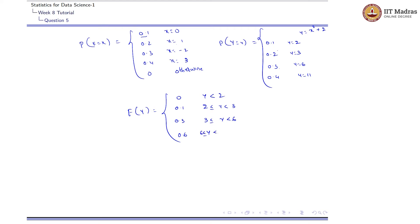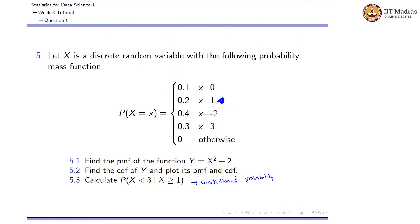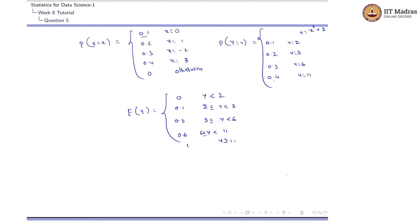For y ≥ 11, the cumulative probability is 0.6 + 0.4 = 1. Now let us plot the PMF and CDF.